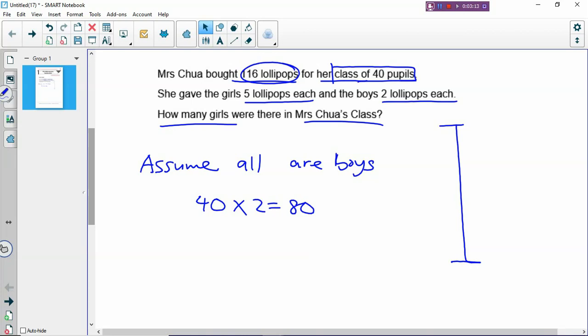You assume all are boys, so the total is 80. The total lollipops given to all the boys is 80, which is not true, and you put it over here. Why? Because the correct total is bigger. If you have something that is bigger, you put on top.